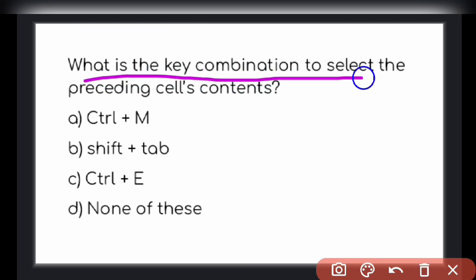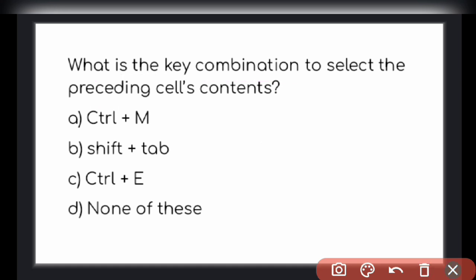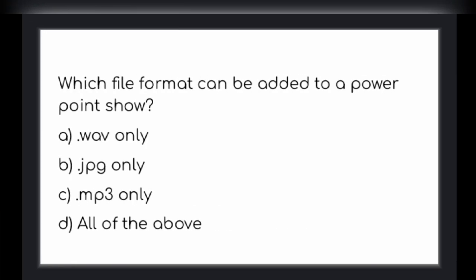What is the key combination to select the preceding cell's contents? The answer is option B, shift plus tab. Shift plus tab is the key combination to select the preceding cell's contents. Next one.